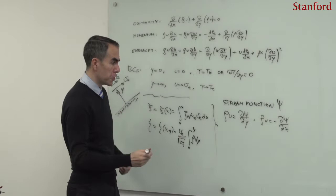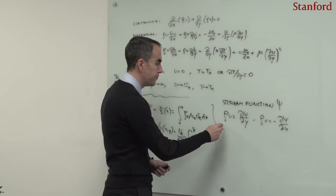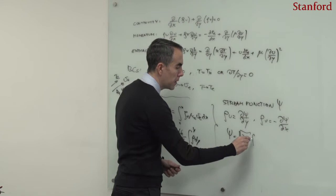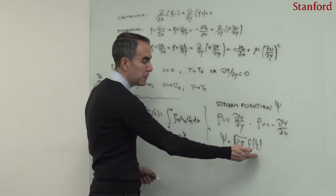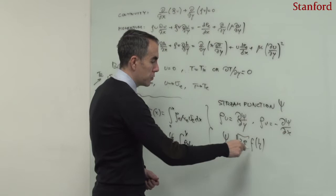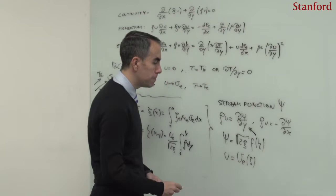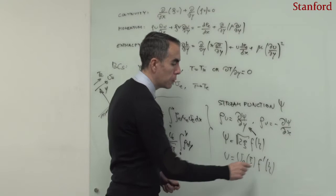One can also propose a transformation for the stream function. For instance, one can define c as the square root of 2*xi, multiplied by a function f of eta, separating the xi dependency from the eta dependency. Substituting this into the stream function equation, one obtains that the velocity u can be expressed as the edge velocity multiplied by f prime of eta, where primes denote derivatives with respect to eta.